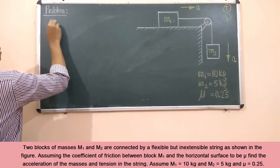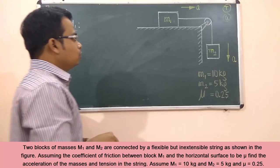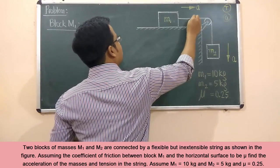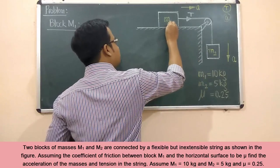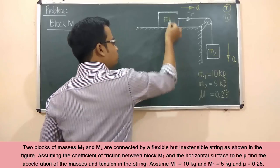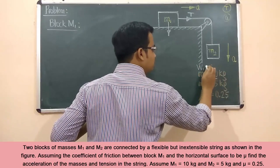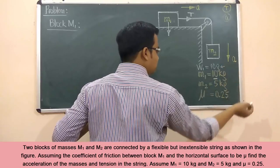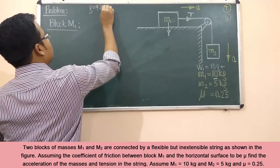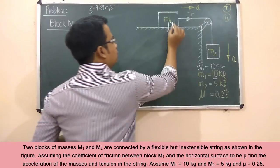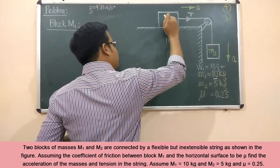Let's do the analysis for block m1. The string is going to pull block m1 by a tension T. At the same time, the weight of the block acts downward. Mass is 10 kg, so the weight W1 equals mg, that is 10 times g, where g is the acceleration due to gravity equal to 9.81 m/s². So W1 = 10g acting downward.